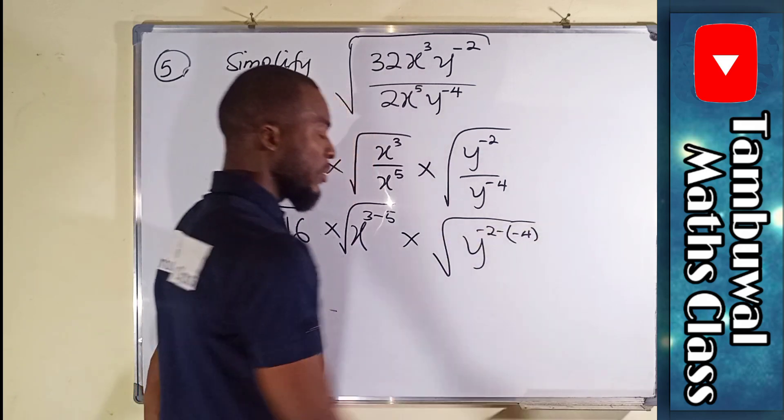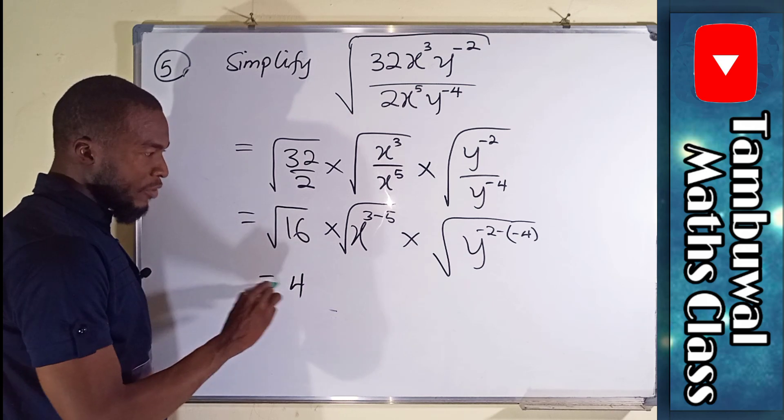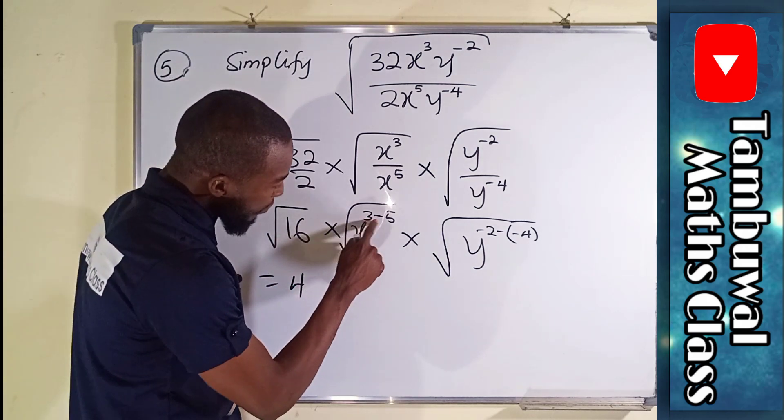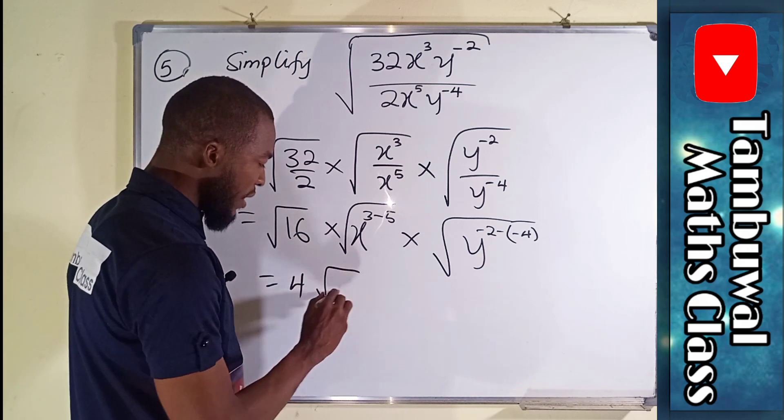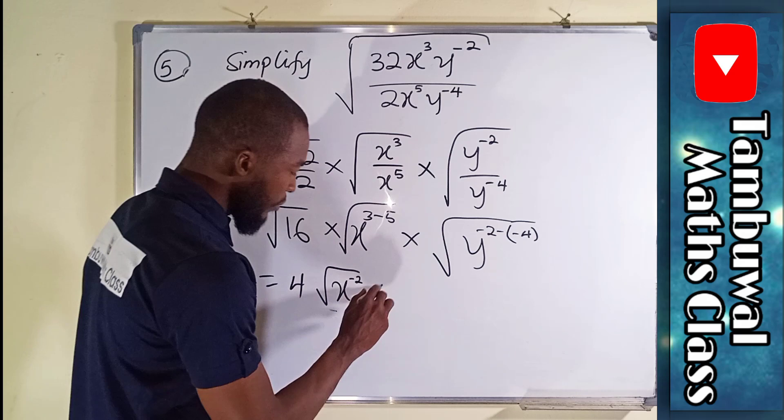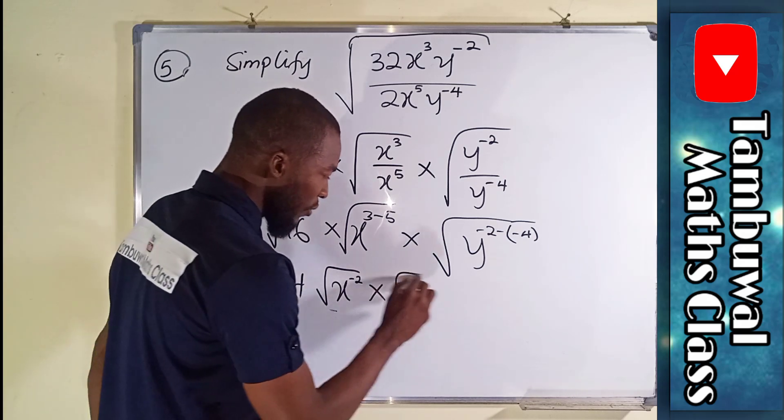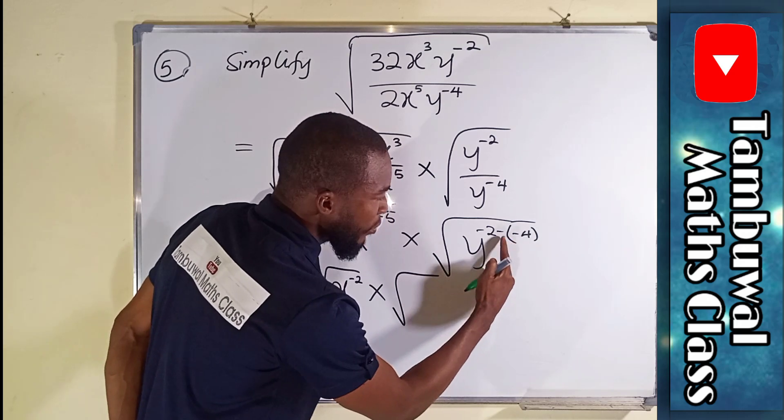We have minus 2 to the top, then you subtract the bottom one which is minus 4. Square root of 16 is 4. We are moving 3 minus 5 is minus 2, so we have square root of x to the negative 2.